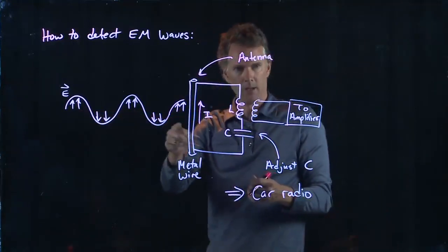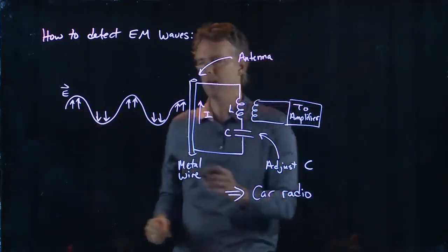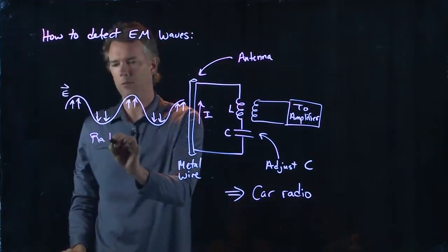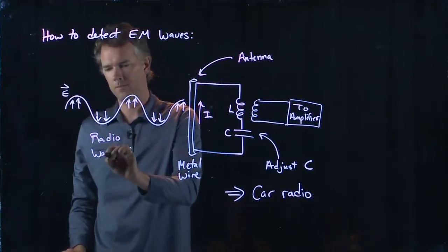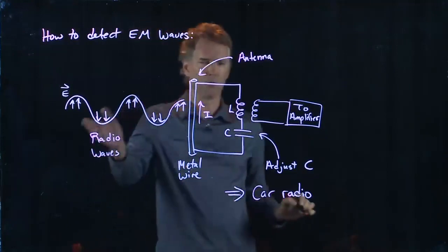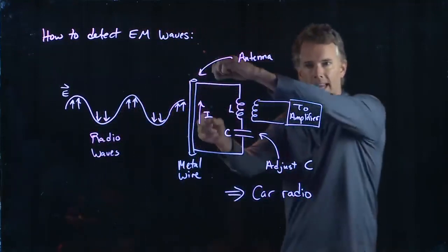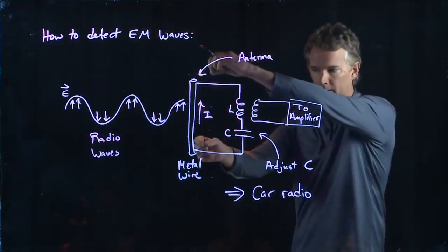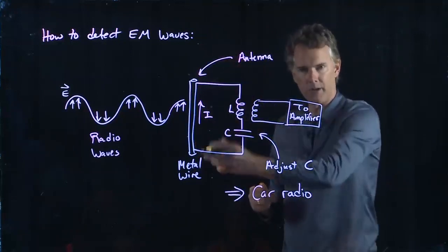What is it there to do? It's there to collect the radio waves that are coming in. This is from the radio station. Those radio waves come in. They hit your big metal bar. It excites current up and down.